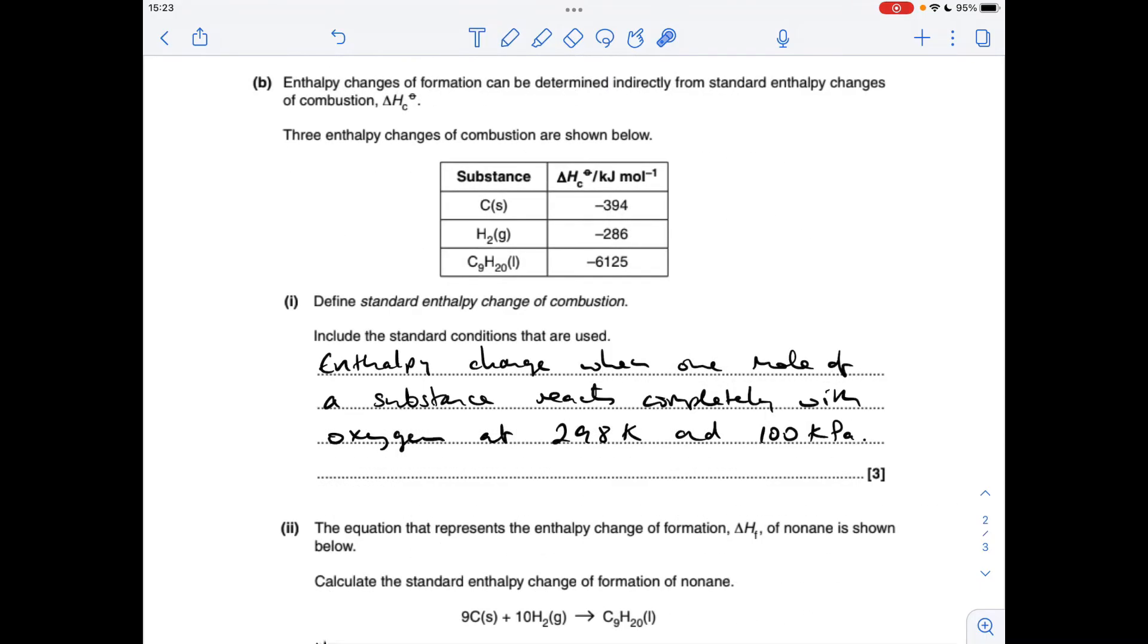Part B starts off with a definition. So we need to define the standard enthalpy change of combustion and include the standard conditions. So enthalpy change of combustion is the enthalpy change when one mole of a substance reacts completely with oxygen at 298 Kelvin, 100 kilopascals pressure.